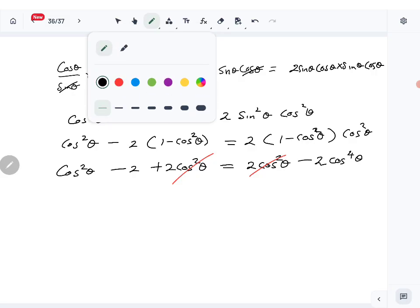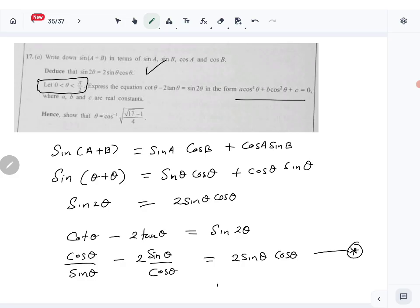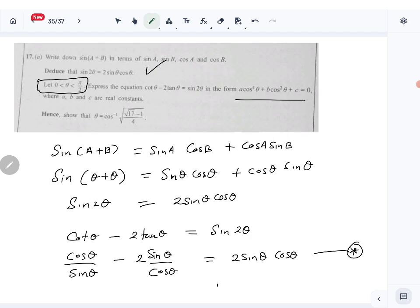Move everything to one side. 2 cos to the 4 theta plus cos square theta minus 2 is equal to 0. So a, b, c power, a is 2, b is 1, and c is minus 2.